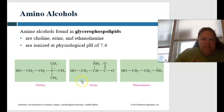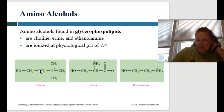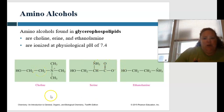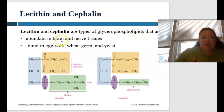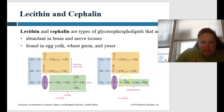If you look at the chemical structures, they differ in carbon-hydrogen groups or on the nitrogen and oxygen. You have choline, serine, and ethanolamine. Then we have lecithin and cephalin — types of glycerophospholipids that are abundant in the brain and nerve tissues. These are also found in egg yolk, wheat germ, and yeast. You can see the choline group in lecithin and the ethanolamine in cephalin.